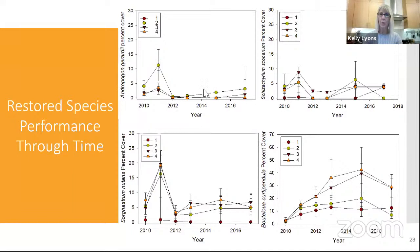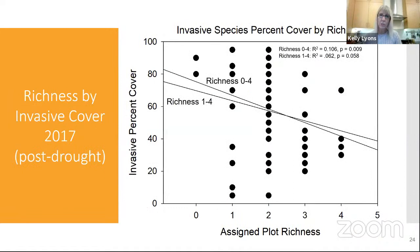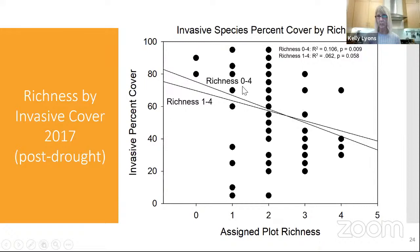This shows the effect of richness — how diverse the plots are, zero to four species on the x-axis — against invasive species percent cover, looking at 2017. When you increase richness in the plots, the re-establishment of the invasive species goes down. Including the zero is a much more robust finding, but we still have a marginally significant finding when we take the zero out. If you do nothing, you get a lot of KR. When you add one, two, three, or four species, you start to decrease the amount of KR — which is good news.